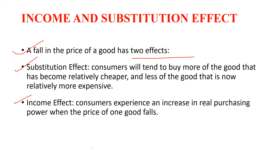The income effect means consumers experience an increase in real purchasing power when the price of a good falls. For example, a person earning 10,000 rupees per month was spending 2,000 rupees on petrol — when the price was 100 rupees per liter. Now the price is 80 rupees per liter. He is consuming the same quantity of petrol but spending less — only 1,600 rupees — saving 400 rupees. Those 400 rupees can be spent on other commodities, so ultimately his real income has increased.